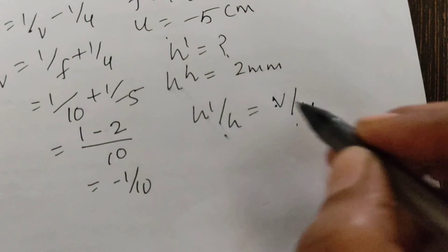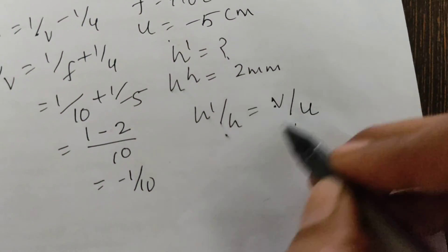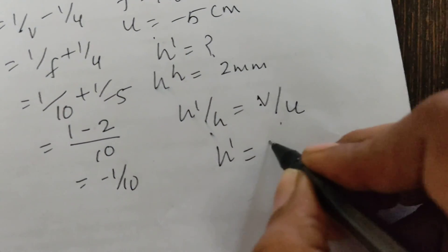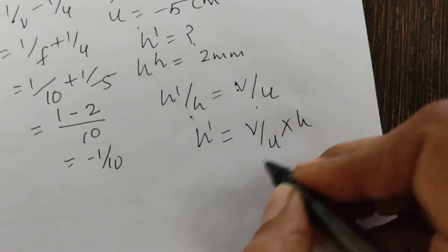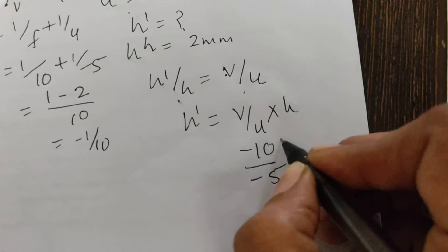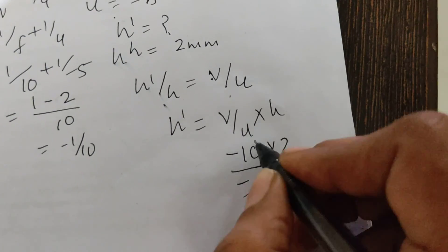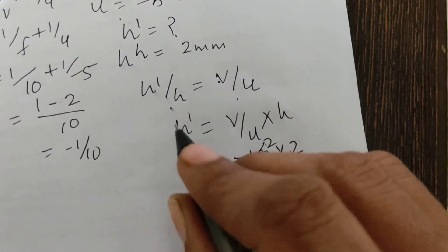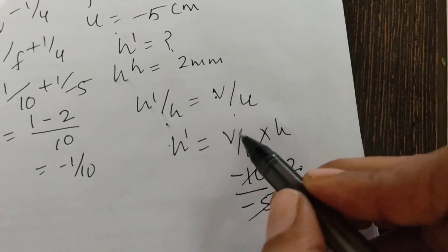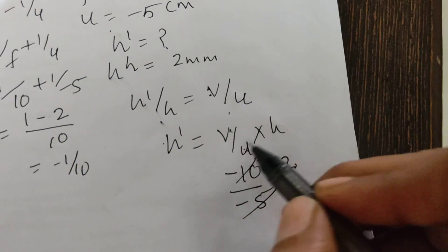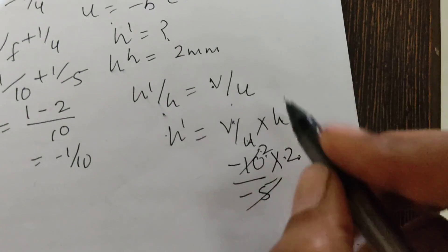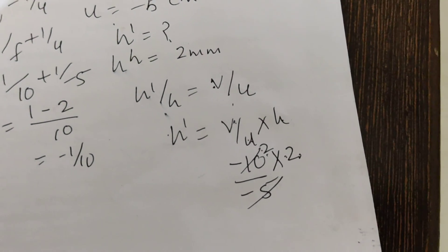So v = −10 cm. Now, since it is a ratio, no need to convert units. h′ = (v/u) × h = (−10/−5) × 2 mm = 2 × 2 = 4 mm. The two distances are in centimeters and height in millimeters, but since it is a ratio, the units cancel appropriately. So 4 millimeters is the correct option.